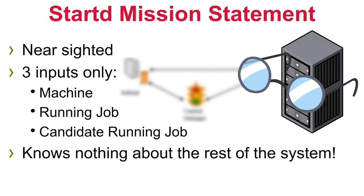The StartD, which is responsible for the worker node, has a very limited view of the whole pool — you could say it is nearsighted. Every decision the StartD makes is based on inputs from at most three sources: attributes of the machine (either automatically discovered, such as physical memory or cores, or configured by an administrator), attributes of a currently running job, and attributes of a potential new job candidate. The StartD knows nothing about other jobs running or idle in the system, so all its decisions are very localized.